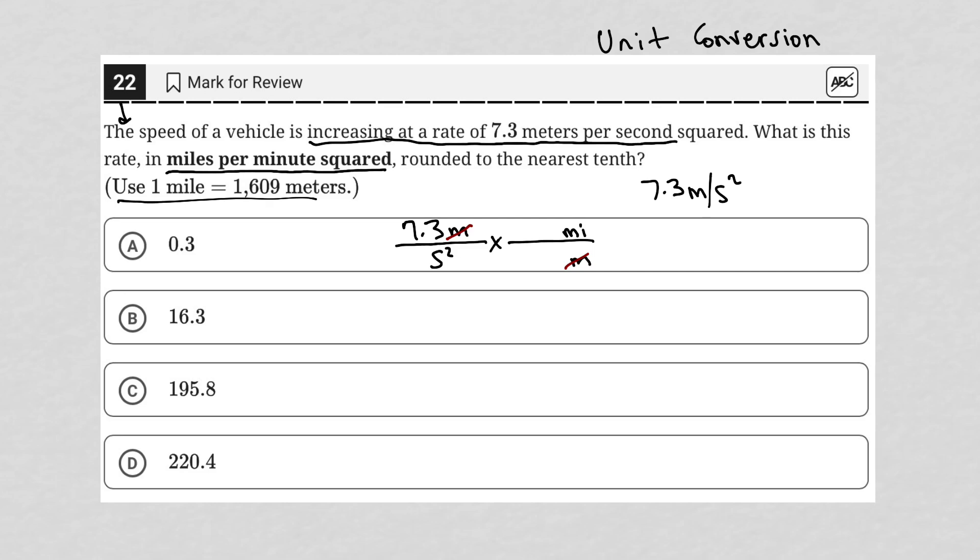The question tells me that for every one mile, so one goes there, I have 1,609 meters. So now we've gotten rid of the meters unit and we now have the miles unit.